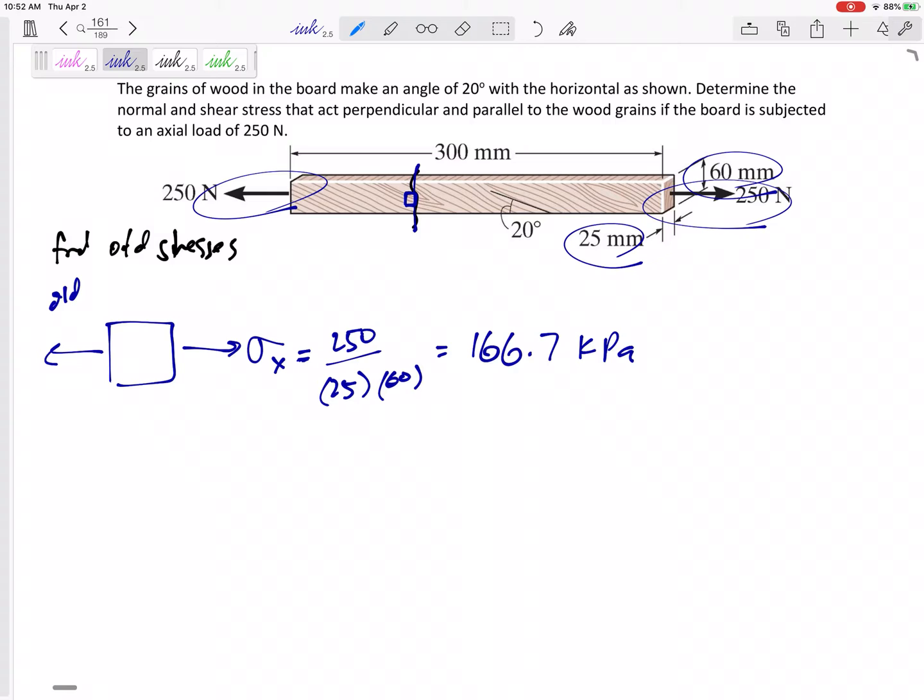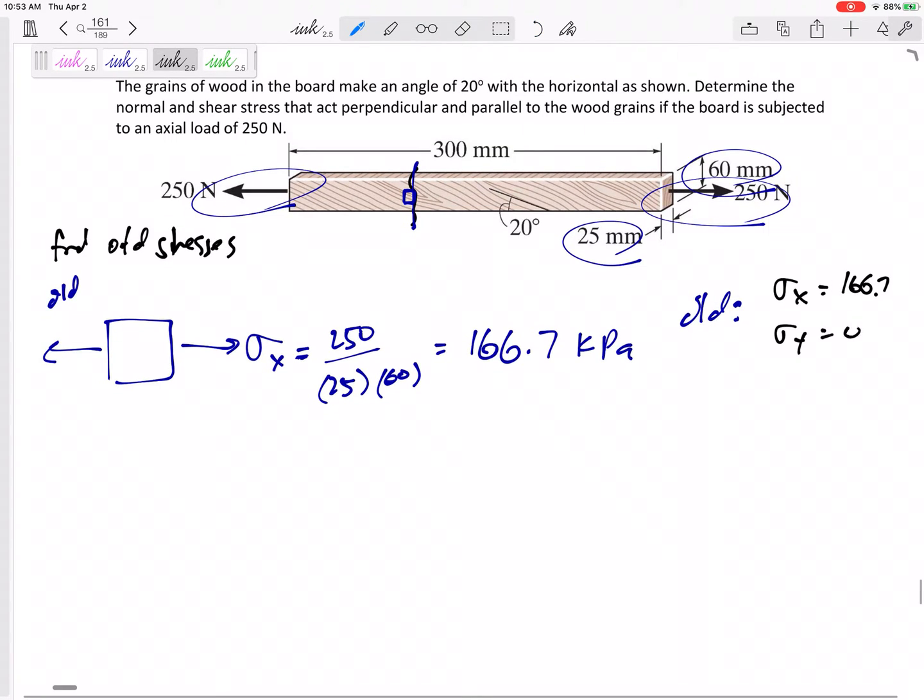We'd have a sigma x of 166 kPa, positive because this would be in tension. There would be no V, there would be no shear. This would be equal to zero. We're cutting it right here, so we're not worried about any X. There are no forces right here giving it a sigma X or anything. That's the only stress. So the old sigma X is positive 166.7, old sigma Y is 0, old tau is 0. These are the old stresses.